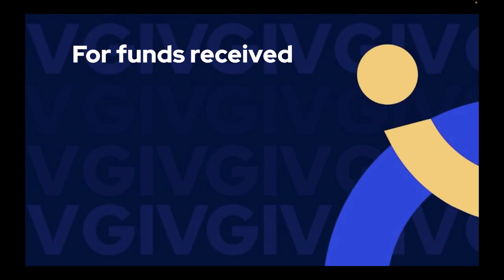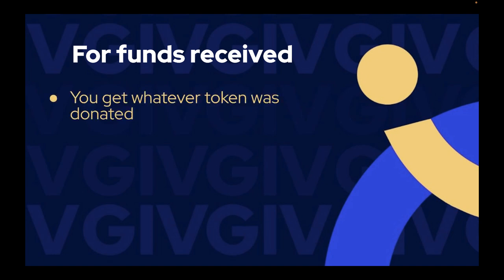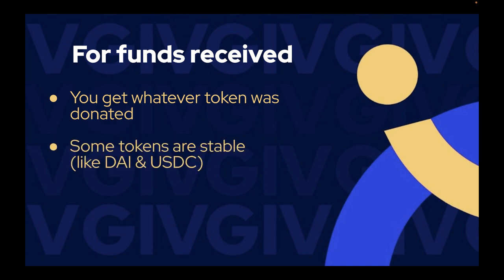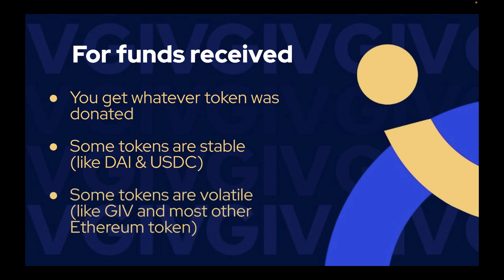It's important to keep in mind that for any funds you receive, you get whatever token was donated to you. If a donor donates in GIV you receive GIV; if they donate in Ethereum you receive Ethereum. Some tokens are stable such as DAI and USDC, and some are volatile such as GIV and most other Ethereum tokens. So if a user donates $10 in DAI or USDC that amount will be consistent, but if they donate $10 in GIV or another Ethereum token that value could go up or down depending on the market.